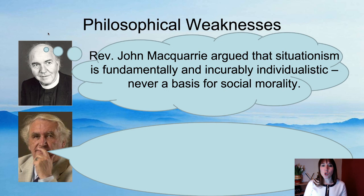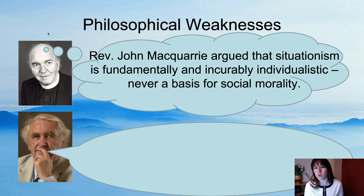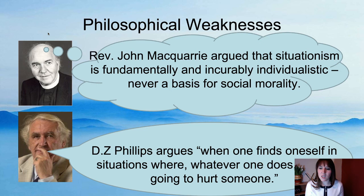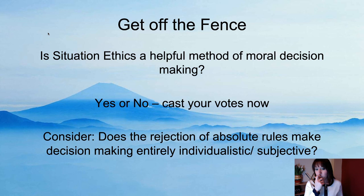Some philosophical weaknesses: Reverend John Wicquiri argued that situationism is fundamentally and incurably individualistic — not a basis for social morality. He's saying this is just too individual, with every individual making their own decision — how can that be a basis for a social morality for everyone? DZ Phillips argues: 'When one finds oneself in situations where whatever one does, one is going to hurt someone.' Even if you do what's loving for that person, you're still going to hurt somebody in the ripple.